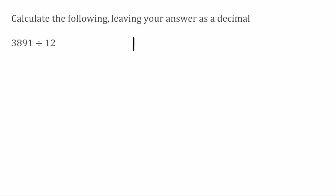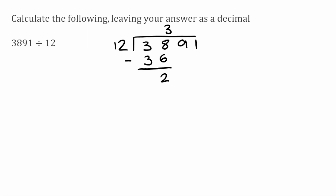For this example we're going to do 3891 divided by 12. How many times does 12 fit into 3? It doesn't, so we move to 38. How many times does 12 fit into 38? Three times, because 3 times 12 is 36. 38 take away 36 leaves 2. We bring down the 9 to get 29. How many times does 12 fit into 29? Twice, because 2 times 12 is 24. 29 take away 24 leaves 5.